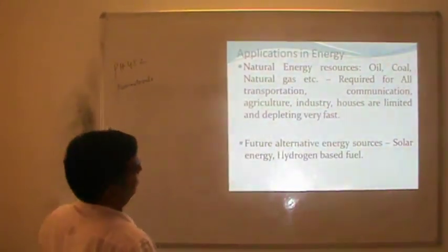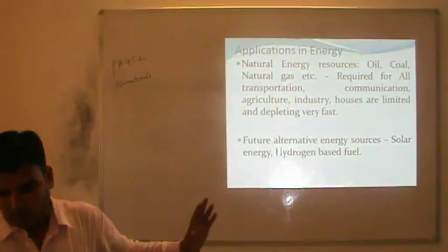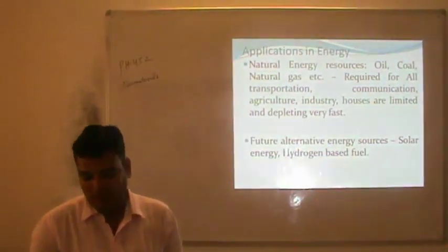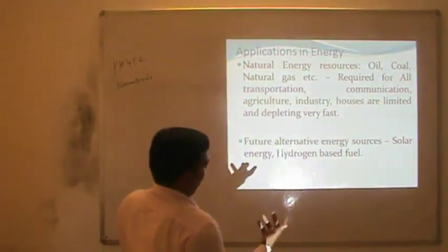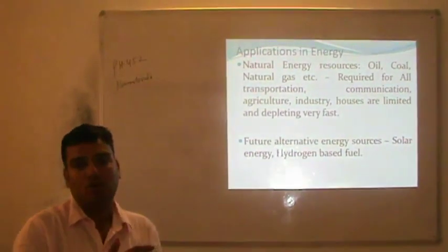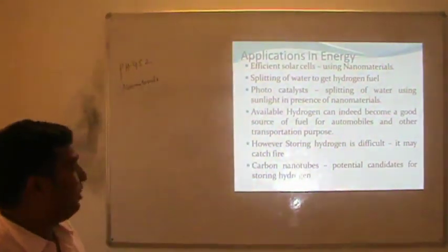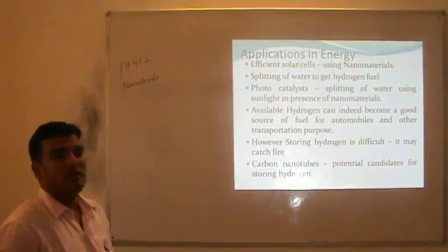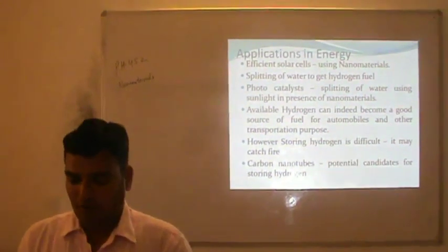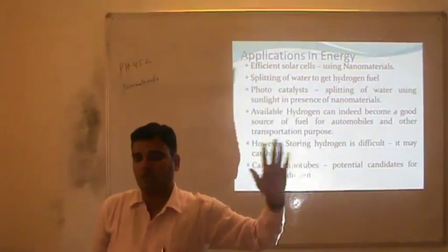All types of natural resources are producing energy, which is used for communication, agriculture, infrastructure, and houses — and demand is developing very fast. Future resources of energy include solar energy and hydrogen fuel. Hydrogen fuel has some drawbacks — the cost of storage of hydrogen fuel is still very high — but within 5-10 years we may find factors which decrease the cost. Applications in energy include efficient solar cells using nanomaterials to increase efficiency, and splitting of water to get hydrogen fuel. Hydrogen fuel is a clean fuel where the chances of pollution are very low.